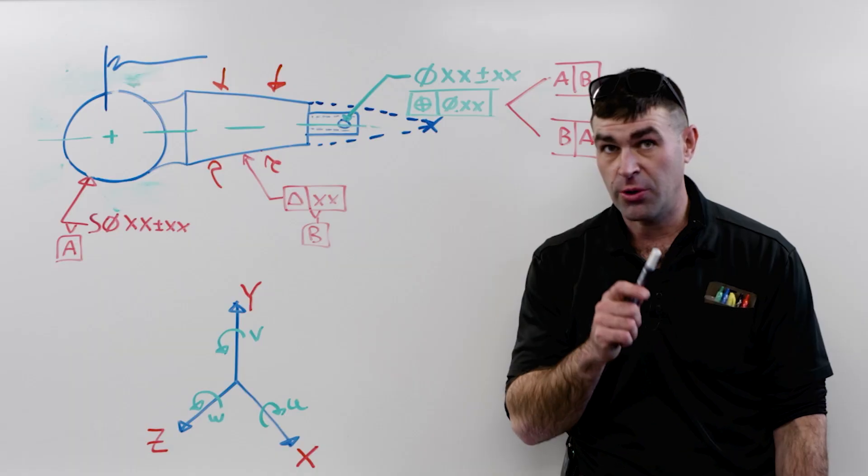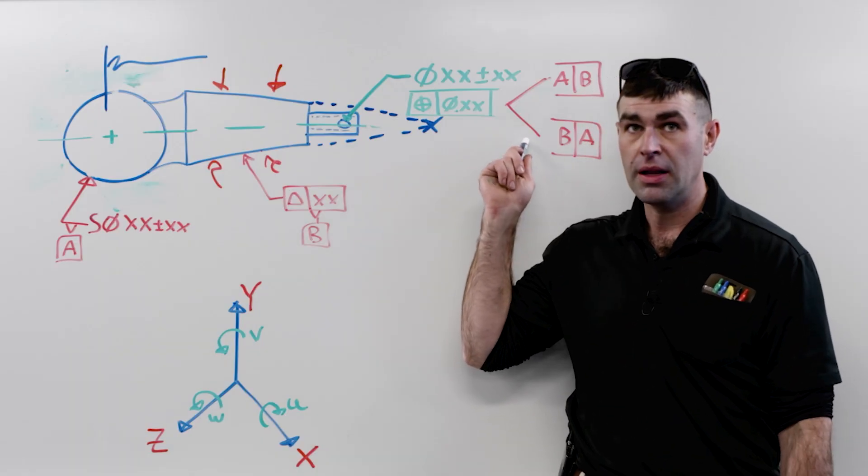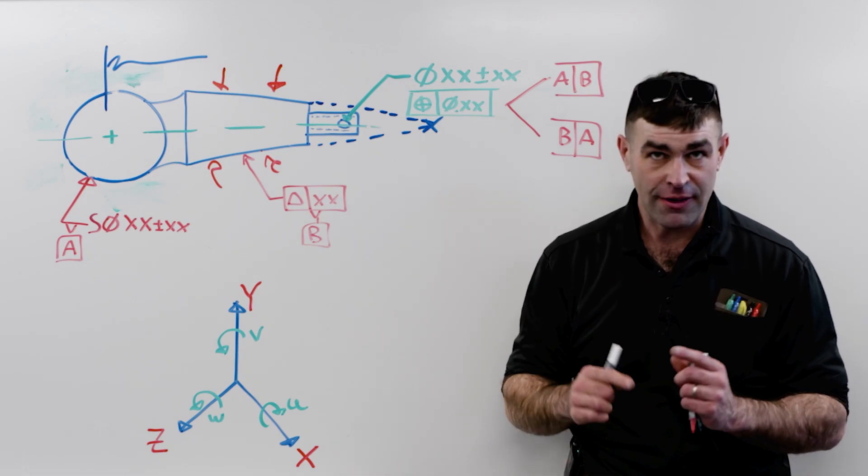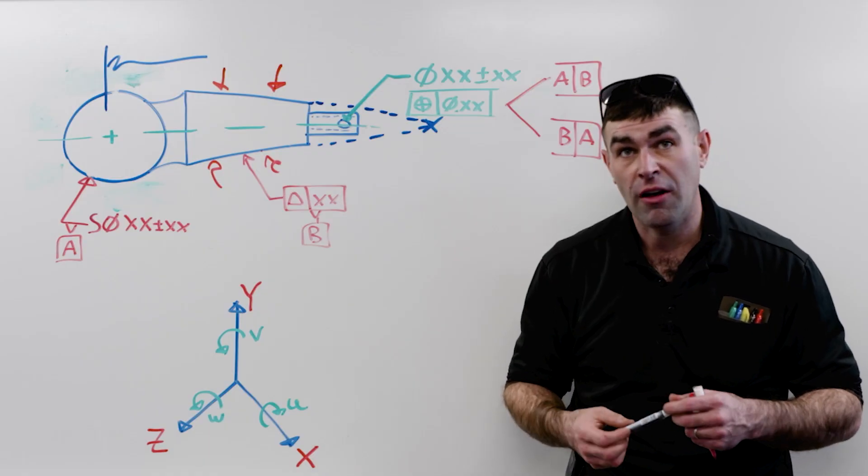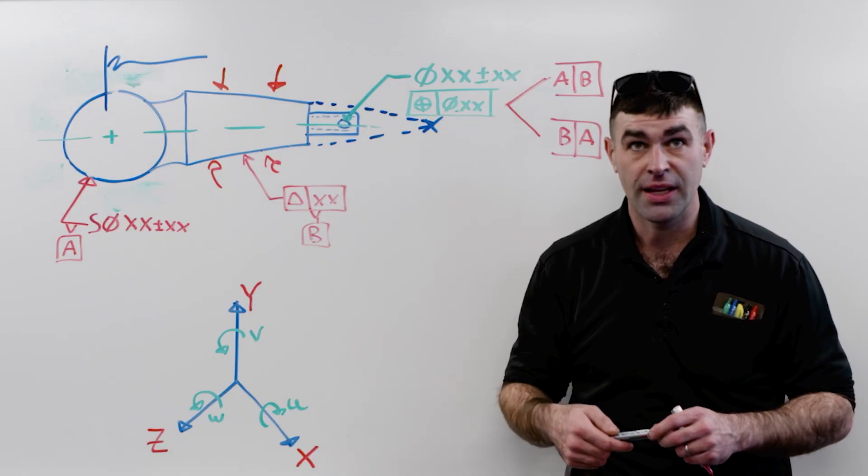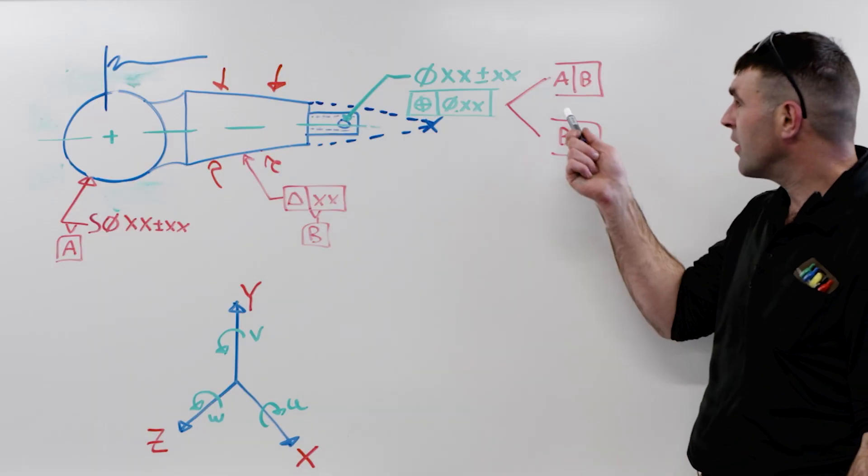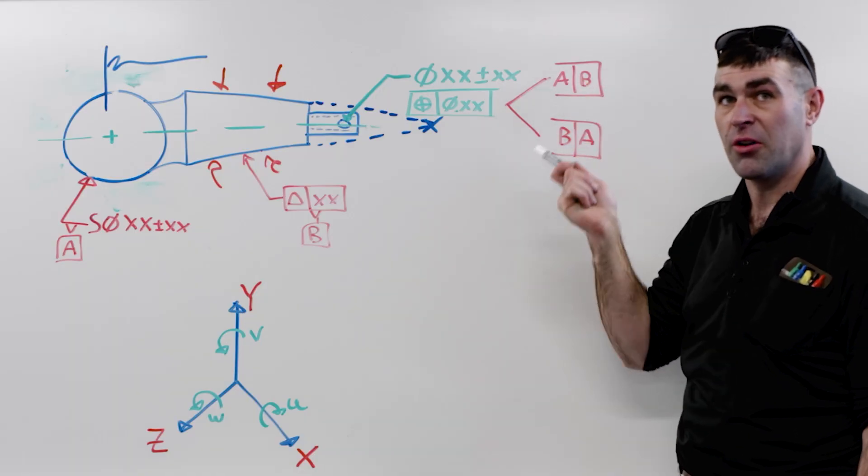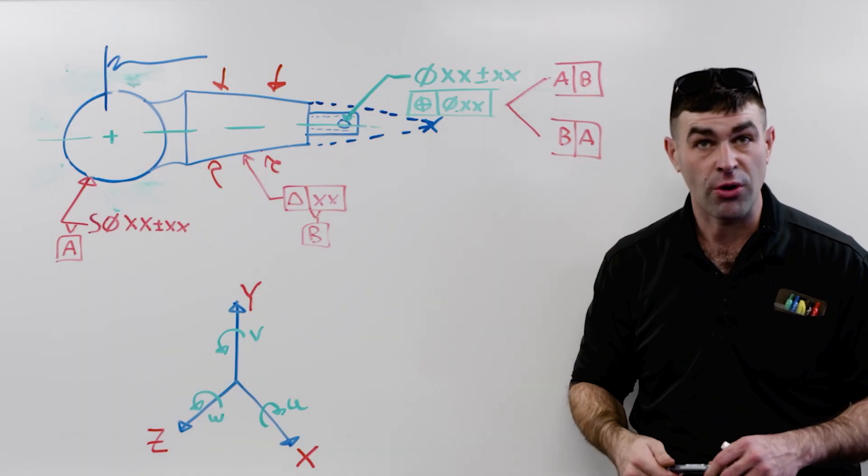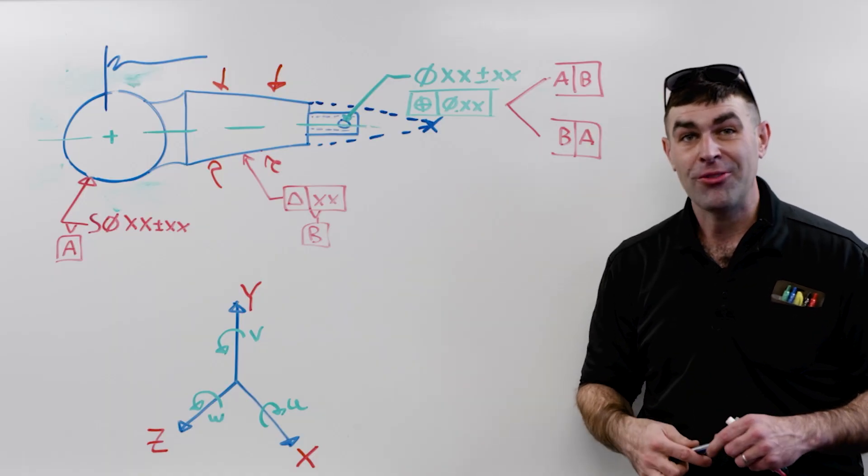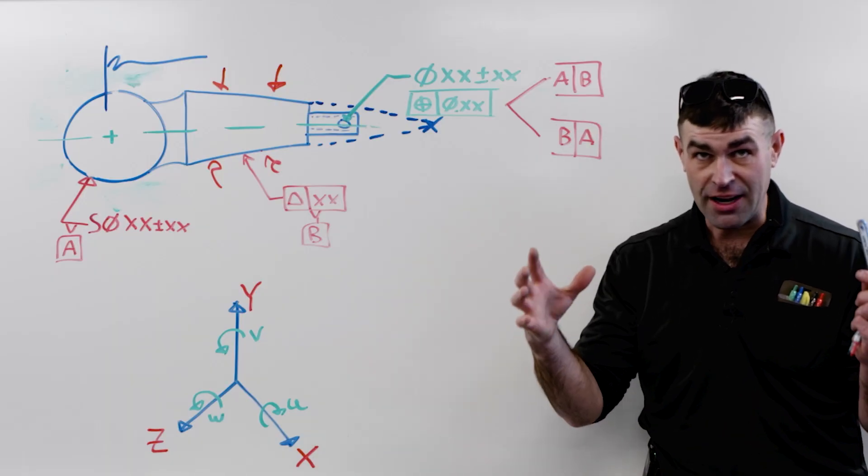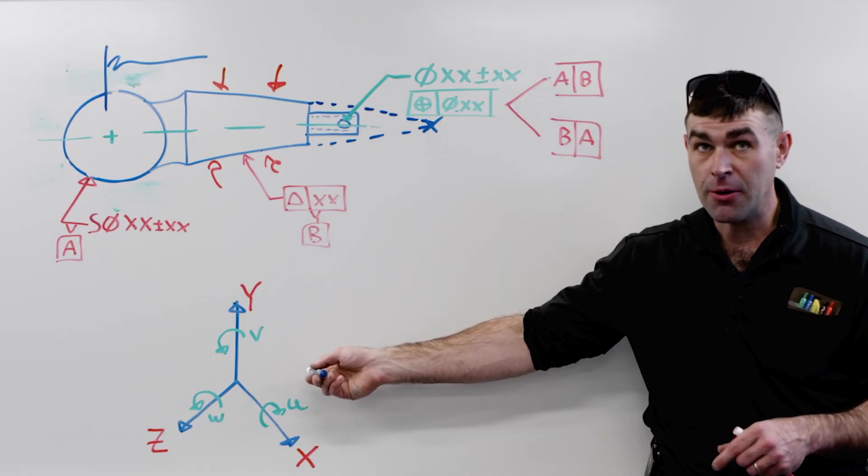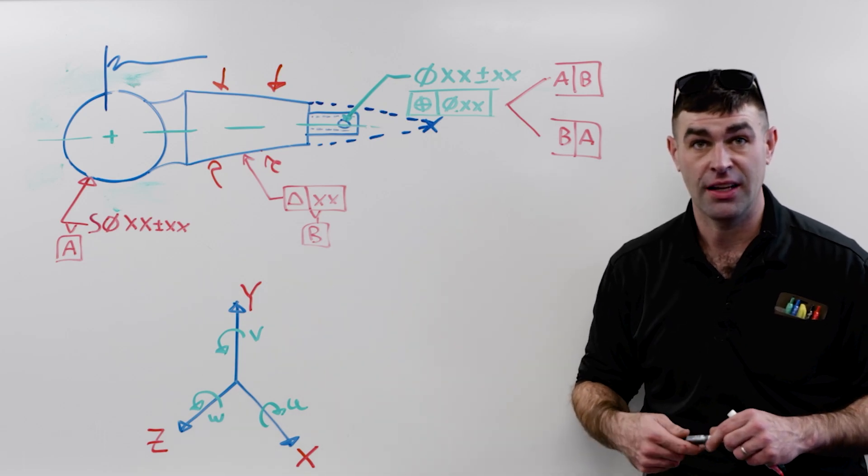Now, this is where you could use a customized datum reference frame to move a degree of freedom. So I could move a translational degree of freedom from B to A, and that's a subject of another video. But I find this example, I've been using it in training sessions more often. I don't think I've made a video about it, except for this one, obviously. I find it a good way to interpret feature control frames. This is like the most important thing, your datum references, what the actual features are and what order they are. If you can think about it in terms of the actual true geometric counterpart and then what degrees of freedom it takes away, you'll be in a pretty good position to understand a lot of GD&T controls.